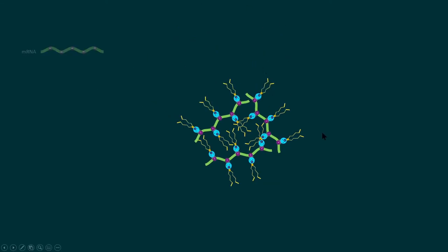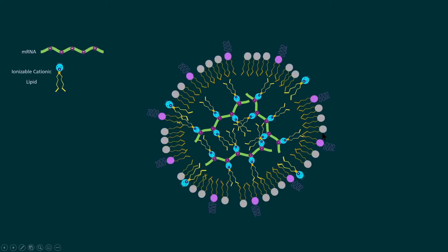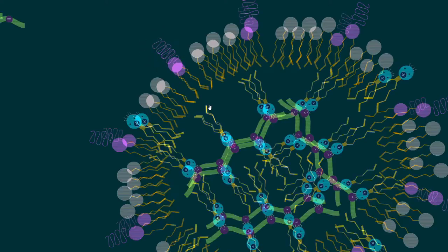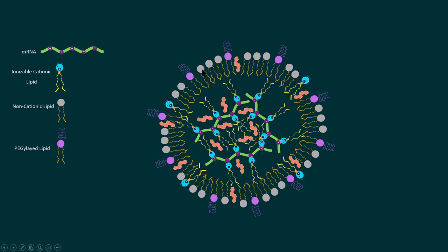So the mRNA is further encapsulated by one or more layers of phospholipids — these are non-cationic lipids. We also have special lipids conjugated with a molecule called PEG, polyethylene glycol — these are called pegylated lipids. Additionally, cholesterol molecules fill the spaces within the lipid nanoparticle structure, imparting strength, structural integrity, and rigidity to the lipid nanoparticle.